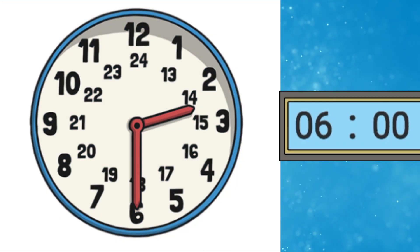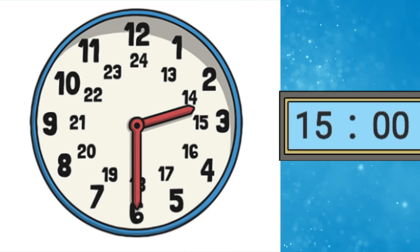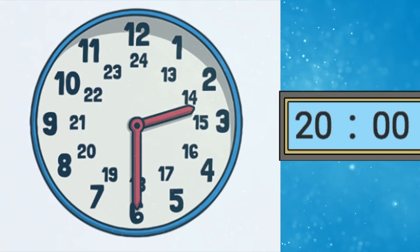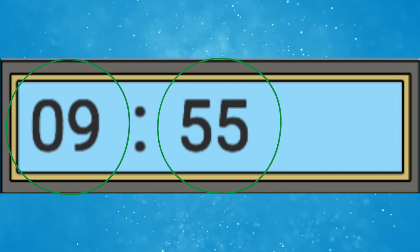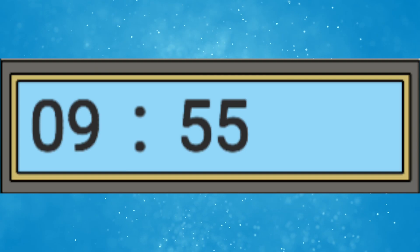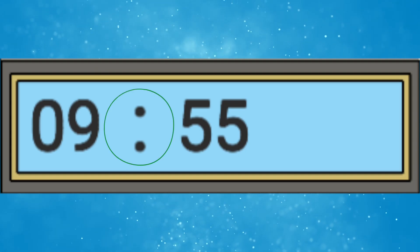24-hour clock refers to digital time where the hours are numbered 1 to 24. Four digits are used to write the 24-hour clock time and the hours and minutes are separated by a colon.